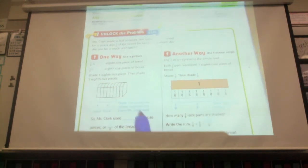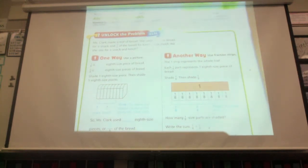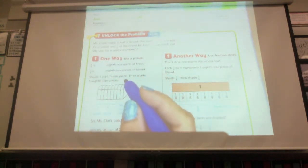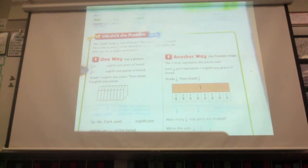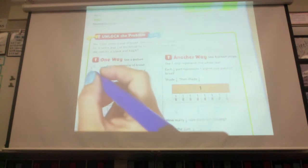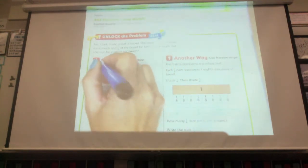Okay, Ms. Clark made a loaf of bread. She used one-eighth of the bread for a snack and five-eighths of the bread for lunch. How much did she use for the snack and lunch? So we're just going to do this with the model. One-eighth is what? It means how many one-eighth pieces did we have? It's kind of a weird way to write it. It's one.